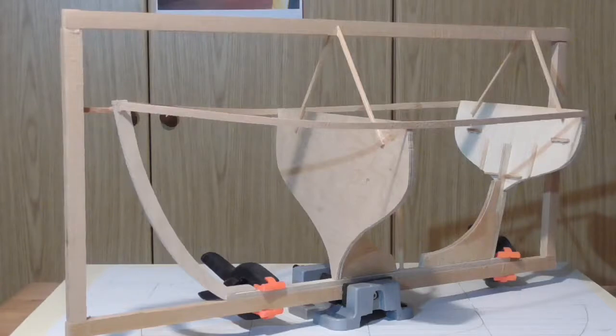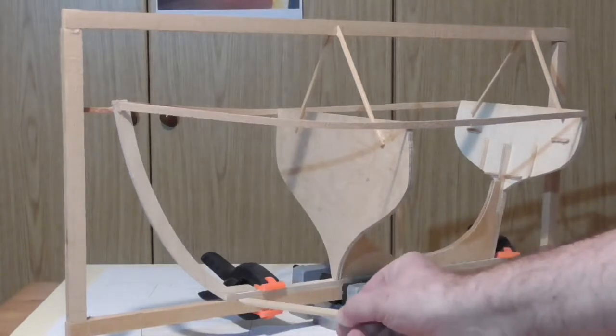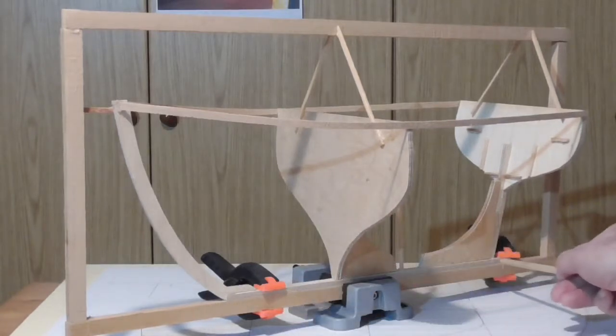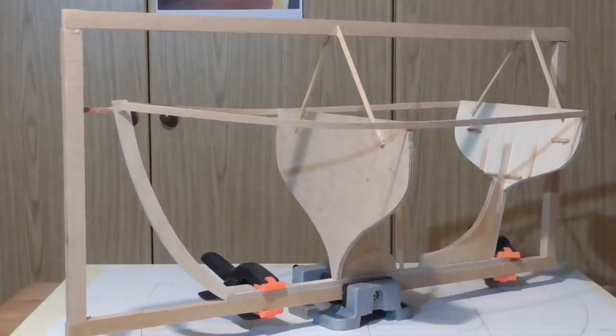With the frame completed, I move on to the main parts. These are the stem, the keel, the stern post, the transom, and the main station. They are all made from a quarter inch plywood, so a little bit over six millimeters.